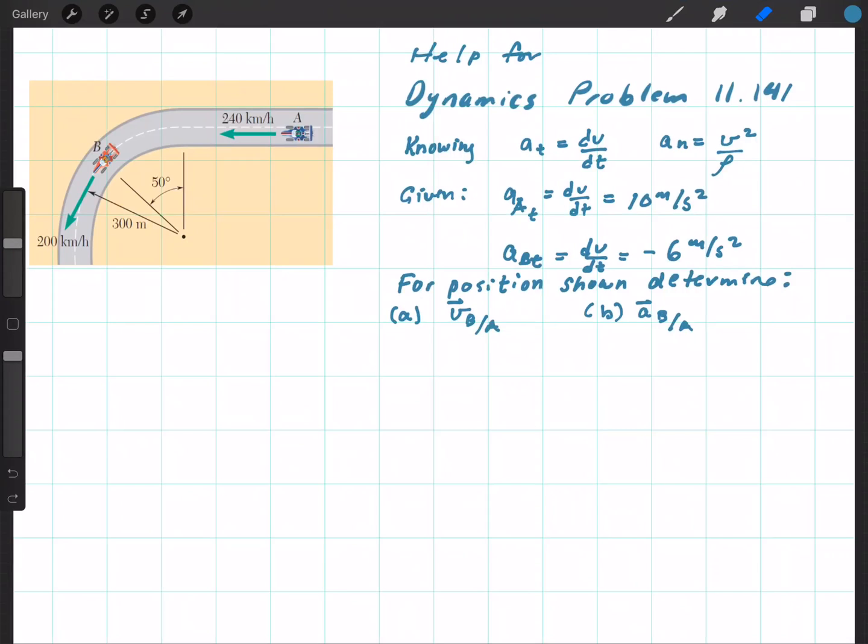So we have what we are given here. We have given the tangential components of acceleration for both car A and car B. We know that the normal component of acceleration is v squared over rho. So we want to find rho for these two.